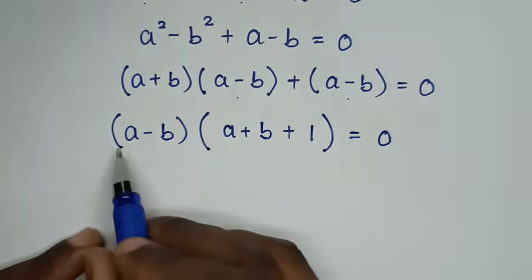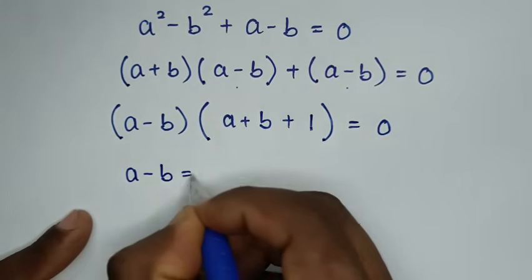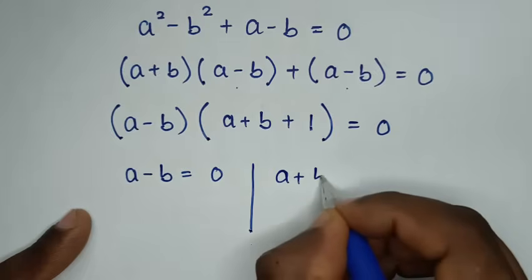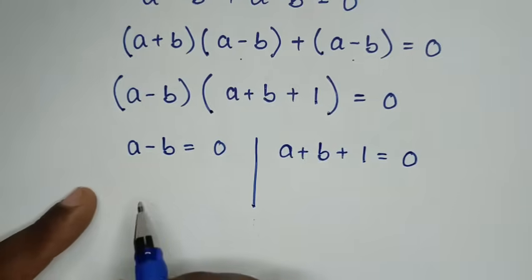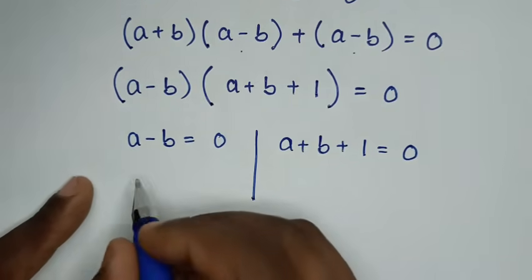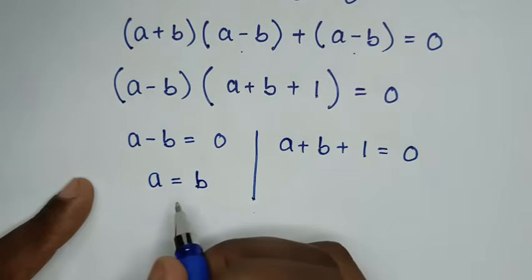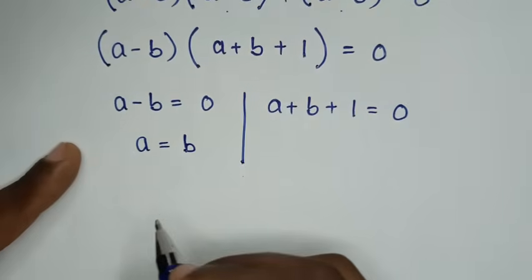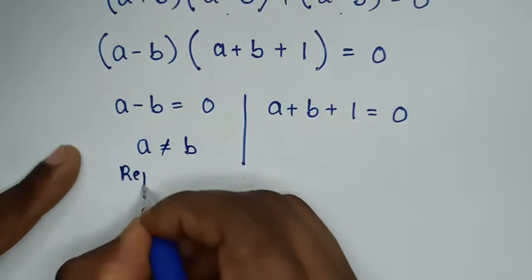From here we have two solutions. The first solution is a minus b equals 0, meaning a equals b. However, the condition from our problem states that a is not equal to b, so this solution is rejected.